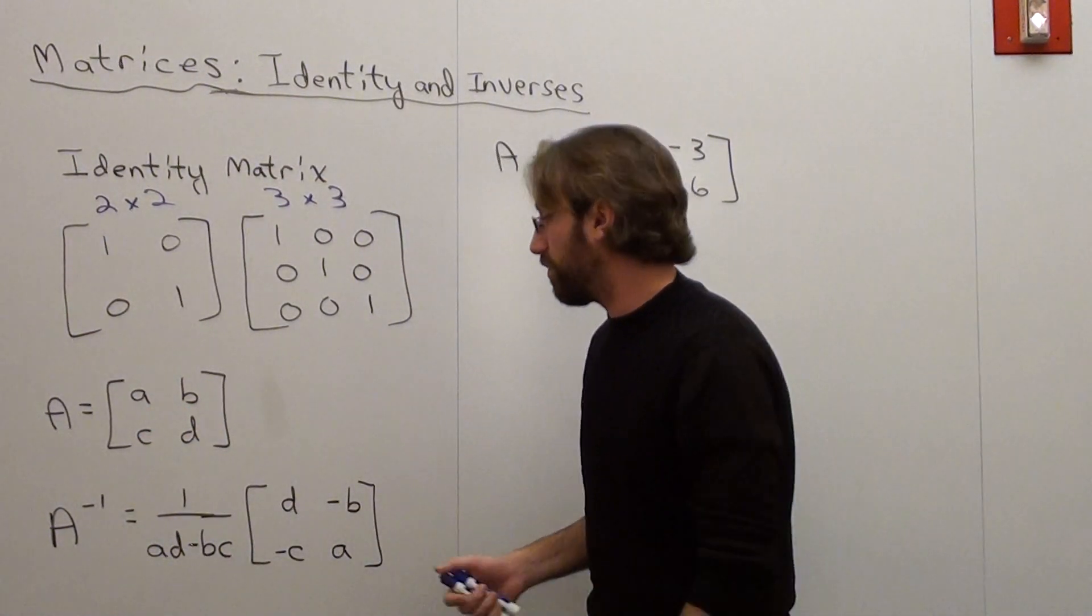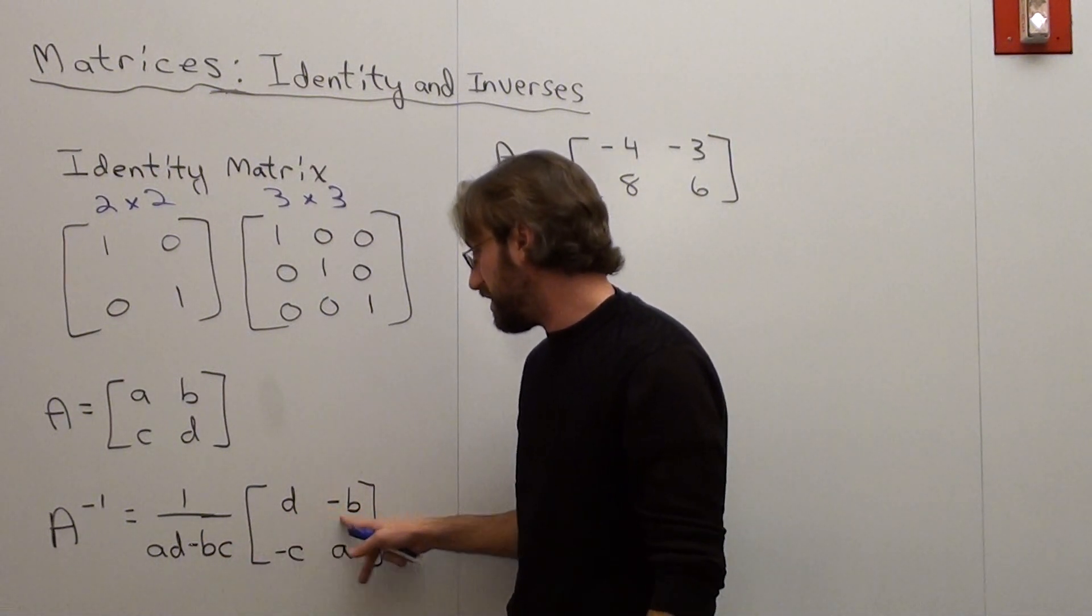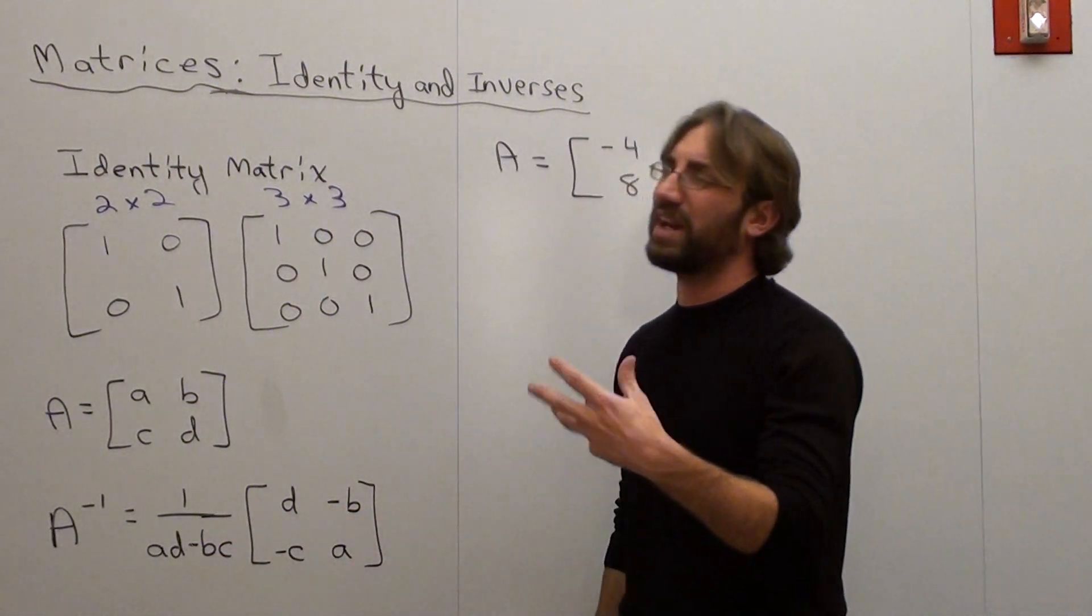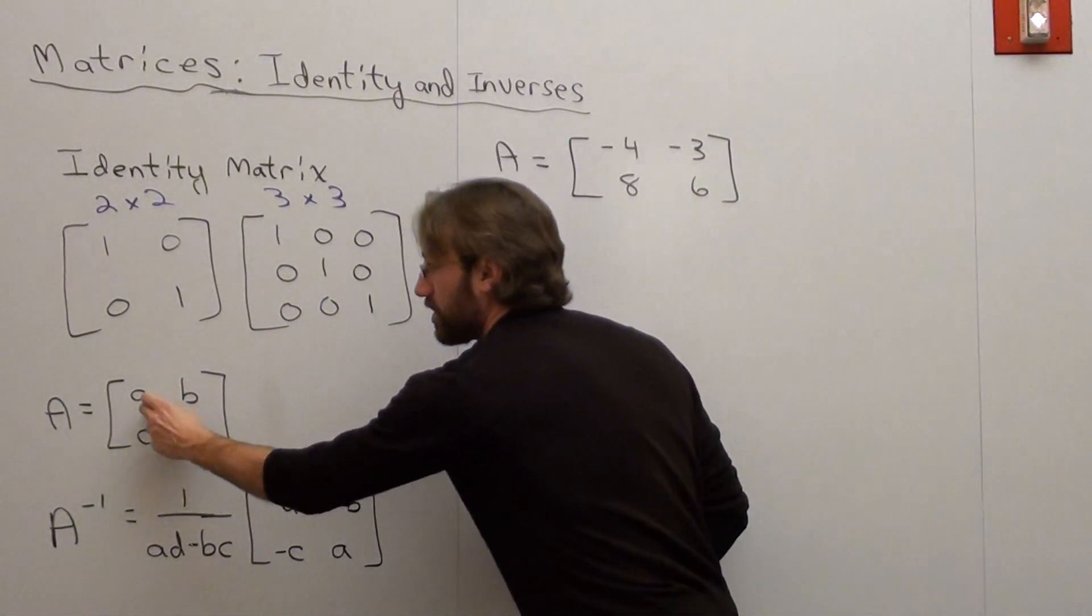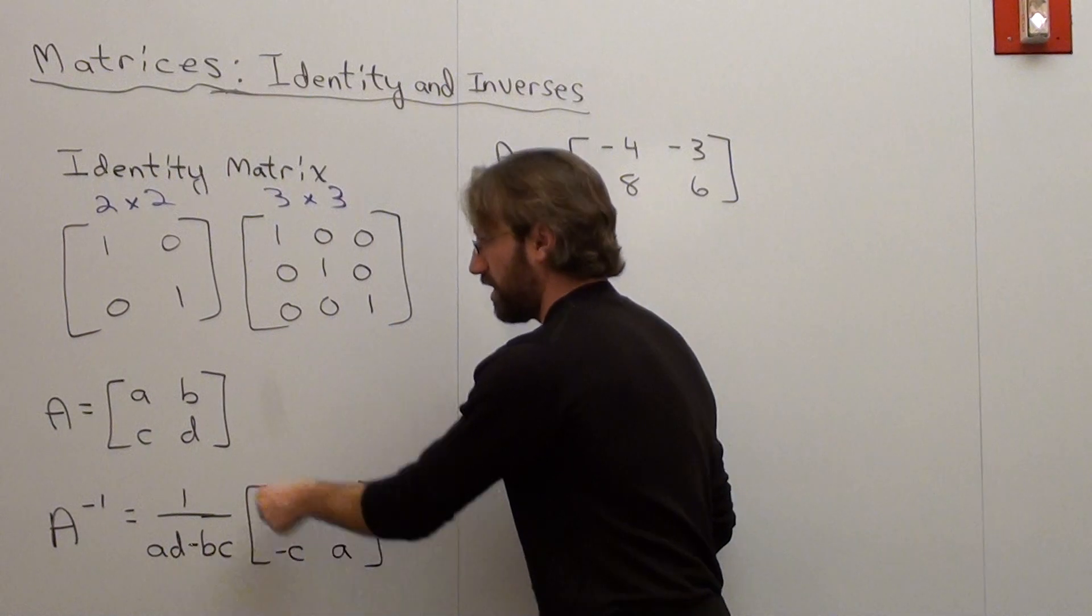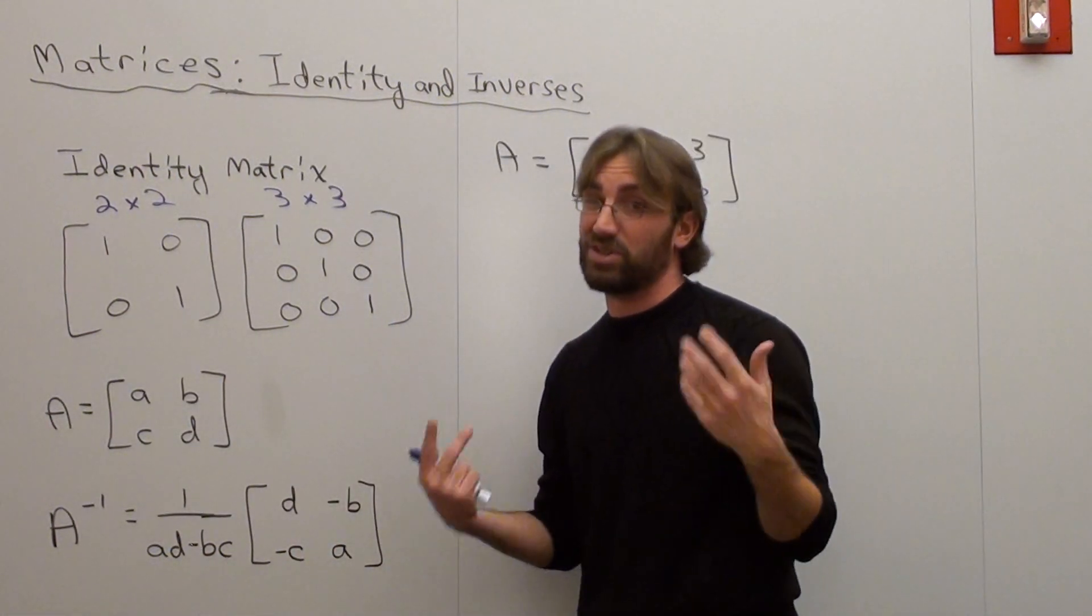Its inverse then would be 1 over the determinant times D, negative B, negative C, A. And the way that I get my students to try to remember that is this. D and A switch, and then B and C just become negative. That's the way that I always just remembered it.